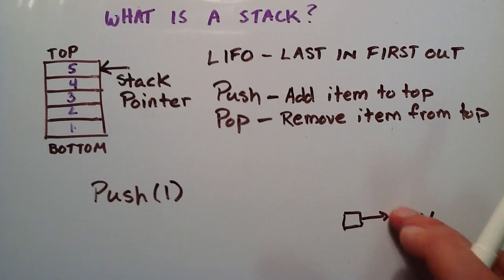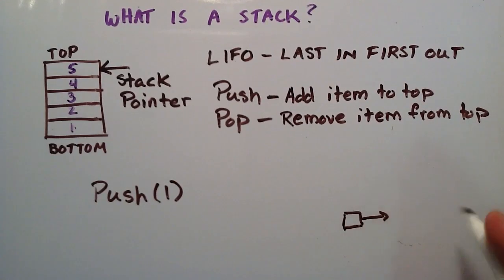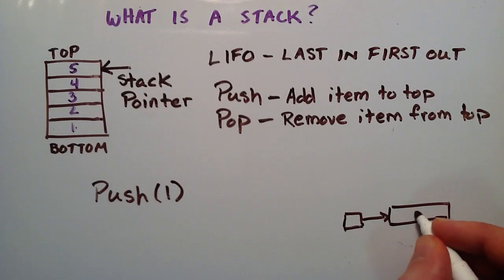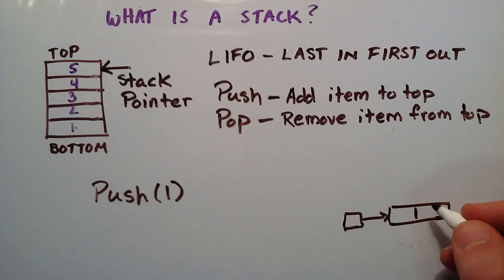So, what's going to happen when I do push 1 is it's basically just going to create a node and then place the item or the data 1 inside that node.